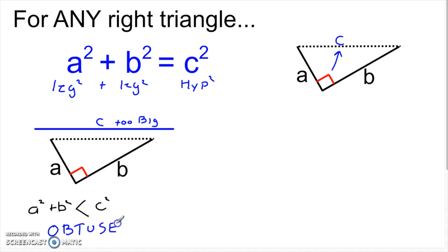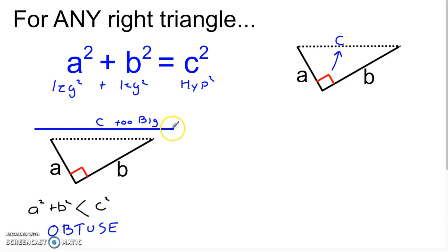Pause the video if this doesn't make sense. If it were a right triangle with a right angle, I'd need the hypotenuse to be this long. But if the largest side of the triangle is just too big — bigger than the hypotenuse would need to be — then the only way to connect the two line segments to this larger one is if that angle opens up to more than 90 degrees, giving me an obtuse triangle.